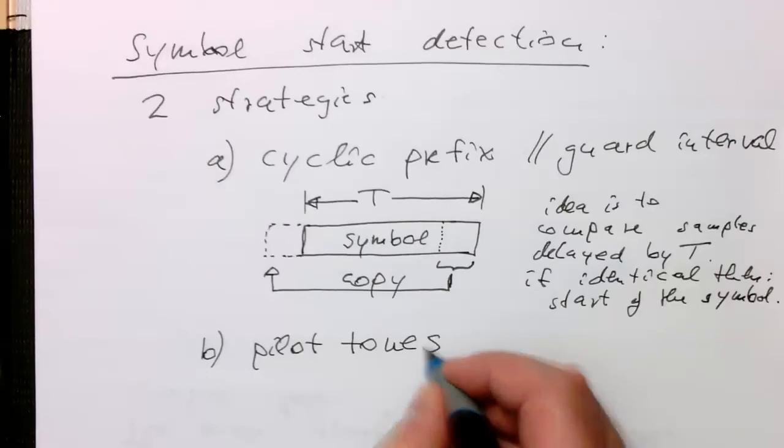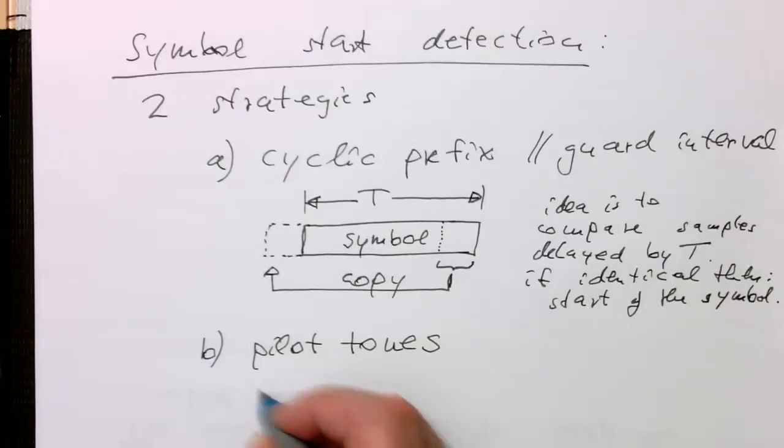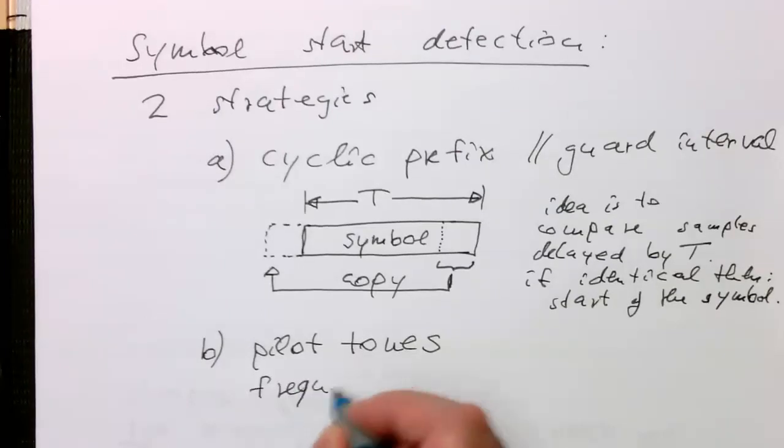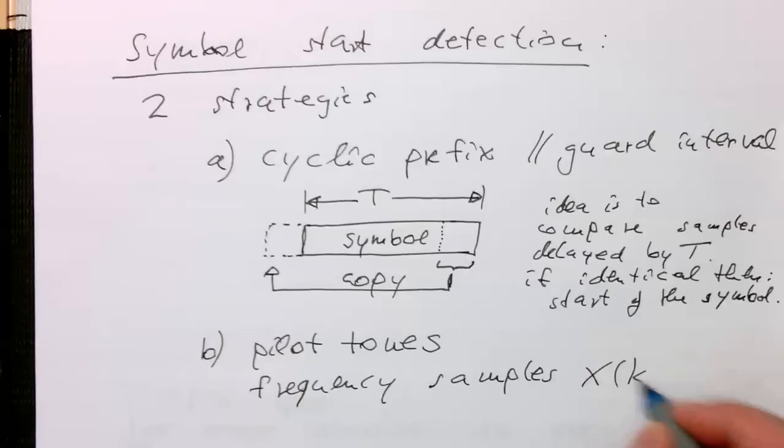The idea is, we take our Fourier transform, our inverse Fourier transform takes frequency samples. Frequency samples X of k.